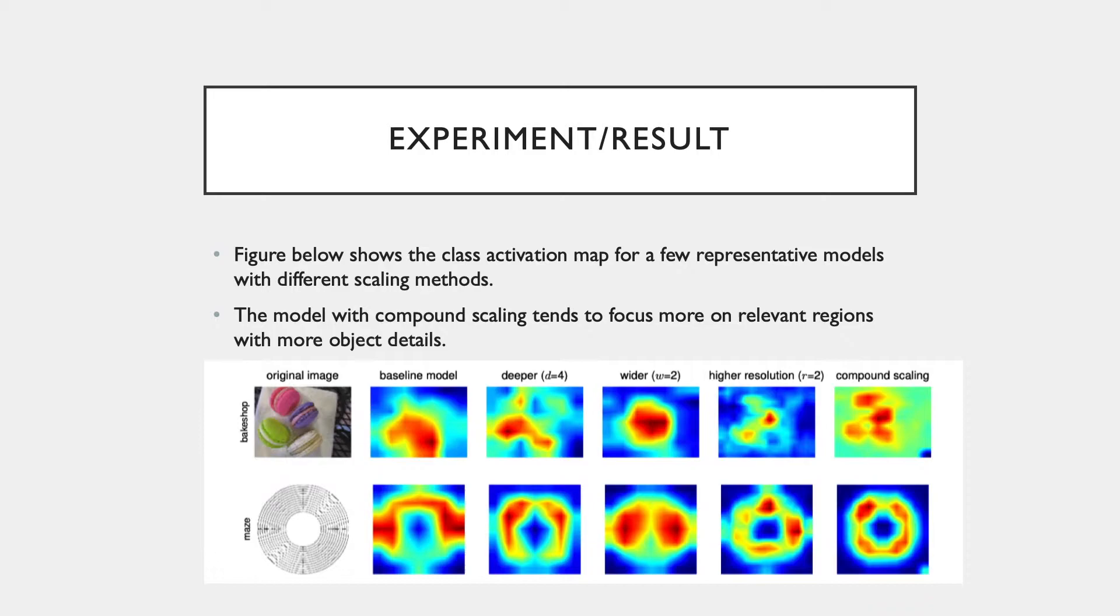To further understand why compound scaling is better than the others, the figure here shows the result on comparison of class activation maps. Images here are randomly picked from the ImageNet validation set. As the figure illustrates, the model with compound scaling method tends to focus more on the relevant region with more object details. The other models kind of lack object details or are unable to capture all objects in the image.